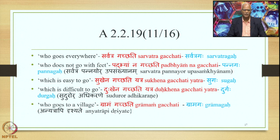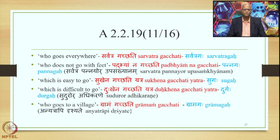From the statement Sudhuror Adhikarane, we derive two more forms. For 'which is easy to go', Sukhenagachati Yatra — where Yatra indicates the Adhikarana meaning of the suffix — we get the form Sugaha. For 'which is difficult to go', Dukhenagachati Yatra gives us the form Durga or Durgaha. Similarly, by applying another Sutra Anhyatrapidrishyate, we also get Gramaga as the output from Gramamgachati, meaning 'one who goes to a village'. This is how forms are generated by adding the suffix D.